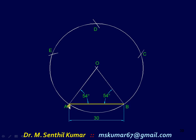Next step: set the compass to 30 mm, equal to AB. Starting from A, draw arcs and get intercept point E — that is, with A as center, cut an arc onto the circle to get point E.